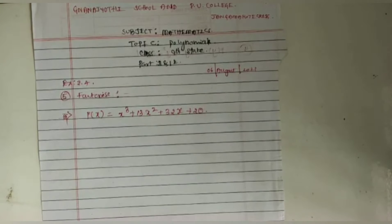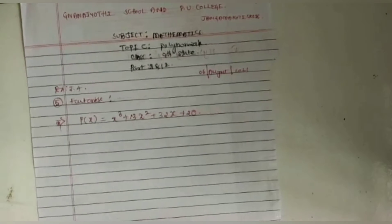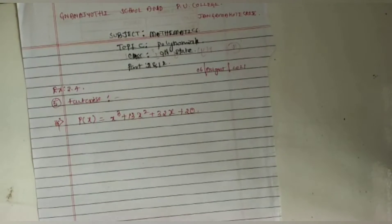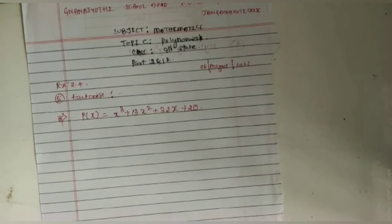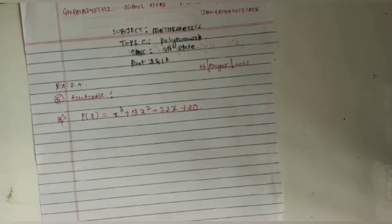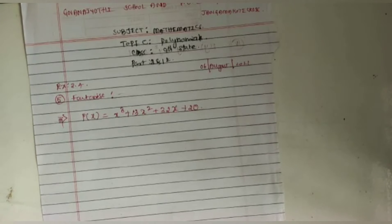Good afternoon children, this is Anman sir. In the previous class we were discussing polynomials. Under polynomials, we are at exercise 2.4, question 3. Factorize p(x) = x³ + 13x² + 32x + 20.